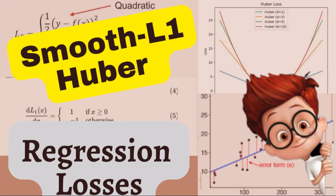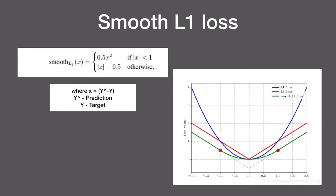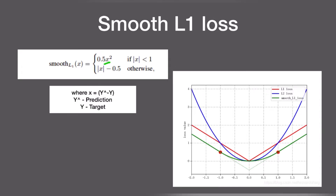First we will go through the smooth L1 loss and then come back to Huber loss. This is the formula for smooth L1 loss. If you observe, this term is actually a squared term which is L2 loss, and this is the absolute difference which is L1 loss. If x is the difference between the prediction and the ground truth, then smooth L1 loss behaves like L2 loss when the difference is less than 1, and like L1 loss when the difference is greater than 1.